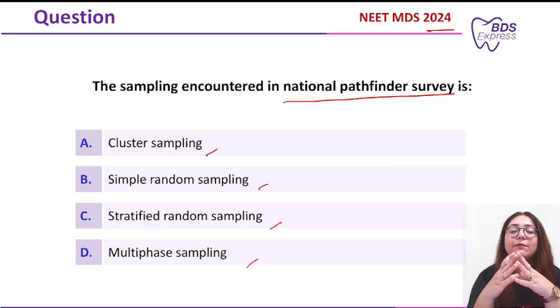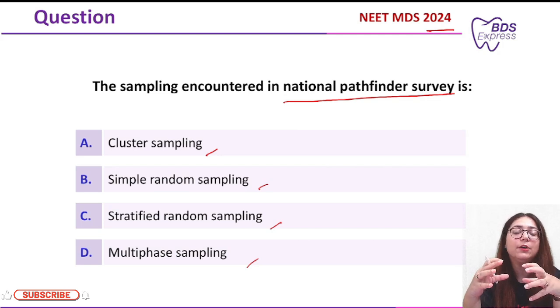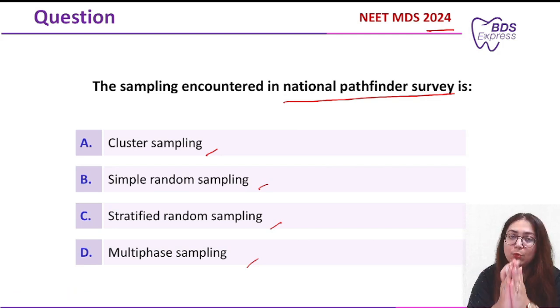Now, National Pathfinder Survey. Basically, the National Pathfinder Survey aims at the collection of basic information about oral disease status and treatment needs. It provides crucial data for planning and monitoring oral health care programs.